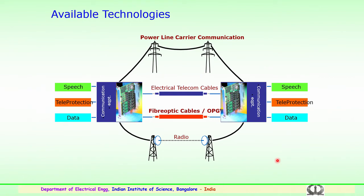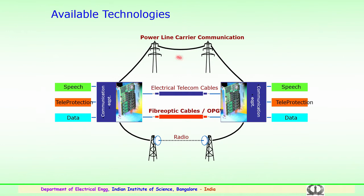What are the present available technologies and where are these technologies being adapted? When you look into the transmission system, power line carrier communication is an example that could be used for communication for various aspects. Either power line carrier communication or electrical telecom cables, which are general telecom cables being used for communication, or it could be fiber optic cables or the overhead ground wires — optical ground wires, OPGW. These are some of the technologies being adopted by transmission or distribution utilities for proper communication of the data.